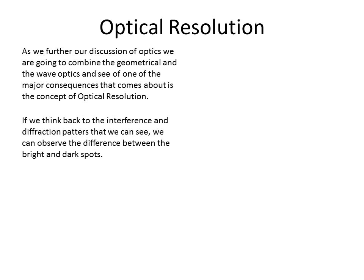If we think back to interference and diffraction, we see a pattern. For example, this is a diffraction pattern from a single slit. We observe the bright spots — our primary bright spot — and we get m equal 1, m equal 2, m equal 3. We also observe our dark spots, where our intensity goes to zero.